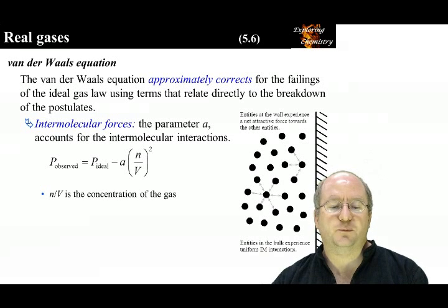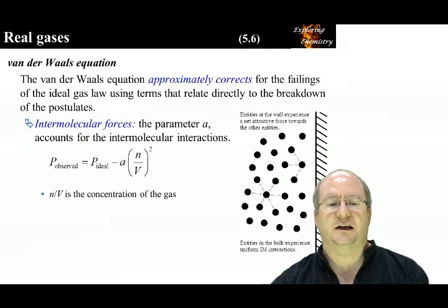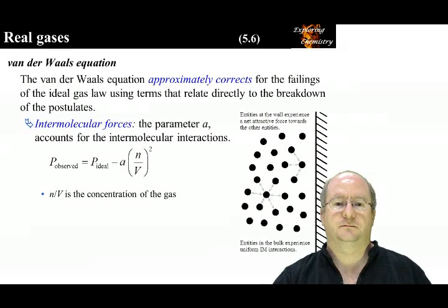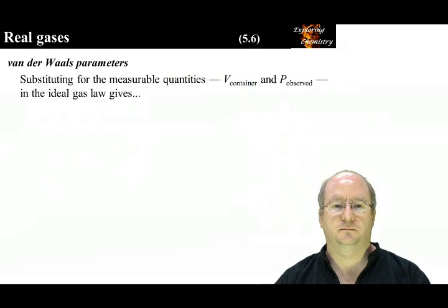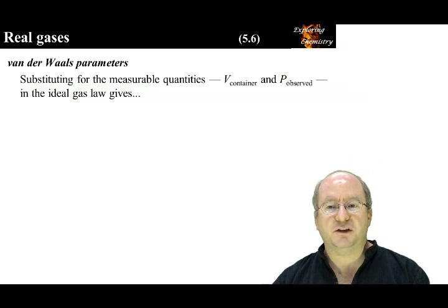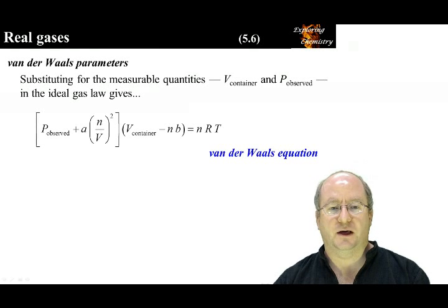The observed pressure will always be less than the ideal pressure because of the attractive intermolecular forces. We can measure the container volume and we can measure the observed pressure. Substituting these into the ideal gas equation gives us the van der Waals equation.